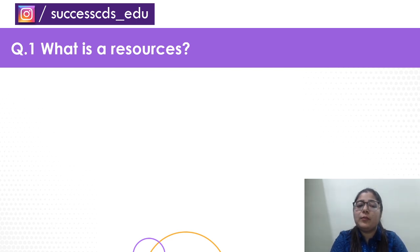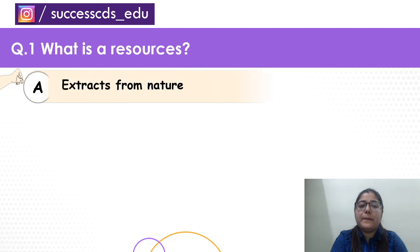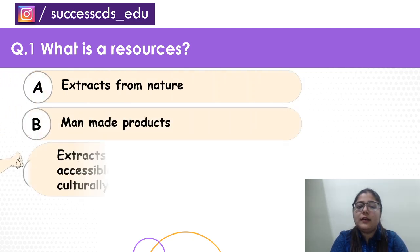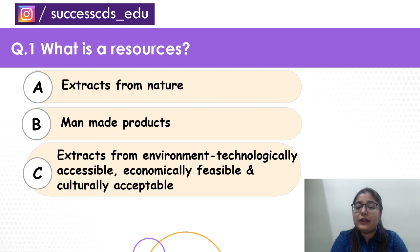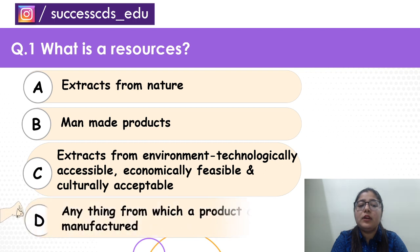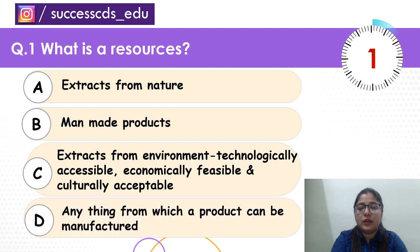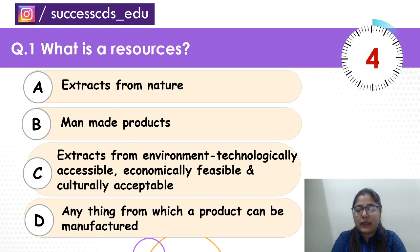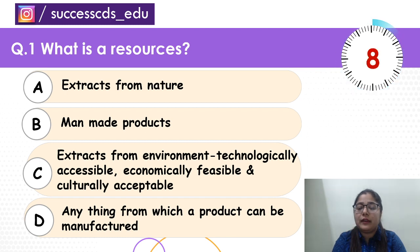So let's begin everybody. What is a resource? Is it extracts from nature? Is it man-made products? Is it extracts from environment that are technologically accessible, economically feasible and culturally acceptable? Or are they anything from which a product can be manufactured? Your time begins now — everybody be very careful, do not rush in. Please attempt the questions correctly as well as quickly.